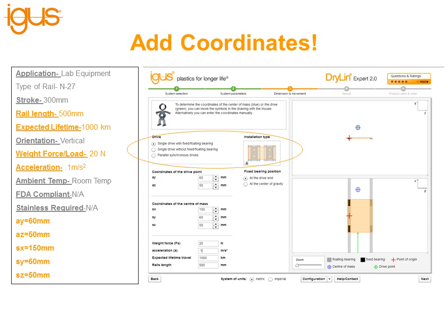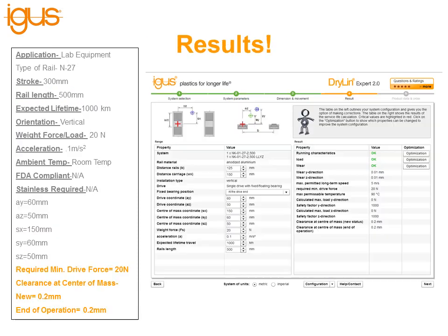Now simply plug in our AY, AZ, SX, SY, SZ, and the load the customer provided, which is 20 newtons. For acceleration, if the customer can't provide it, put in 0.1 or 1 meter per second squared — you can dial that down later. Enter the expected lifetime the customer needs to provide and the rail length. After all this information is in, click Next.